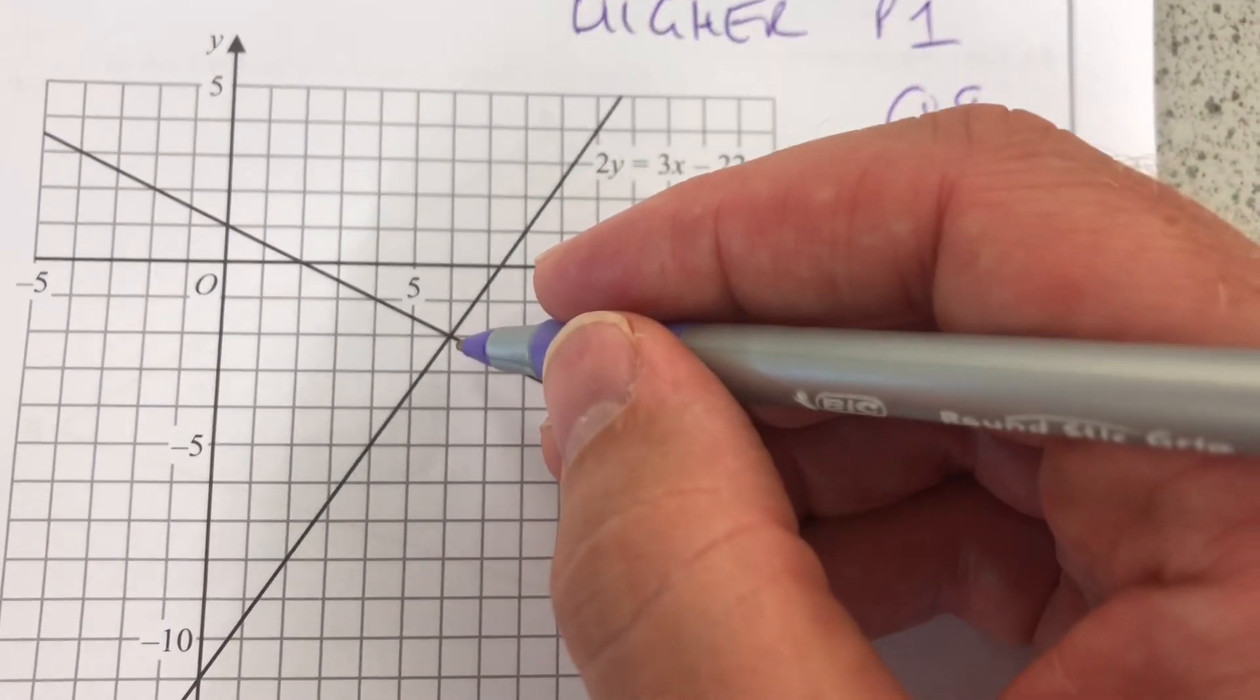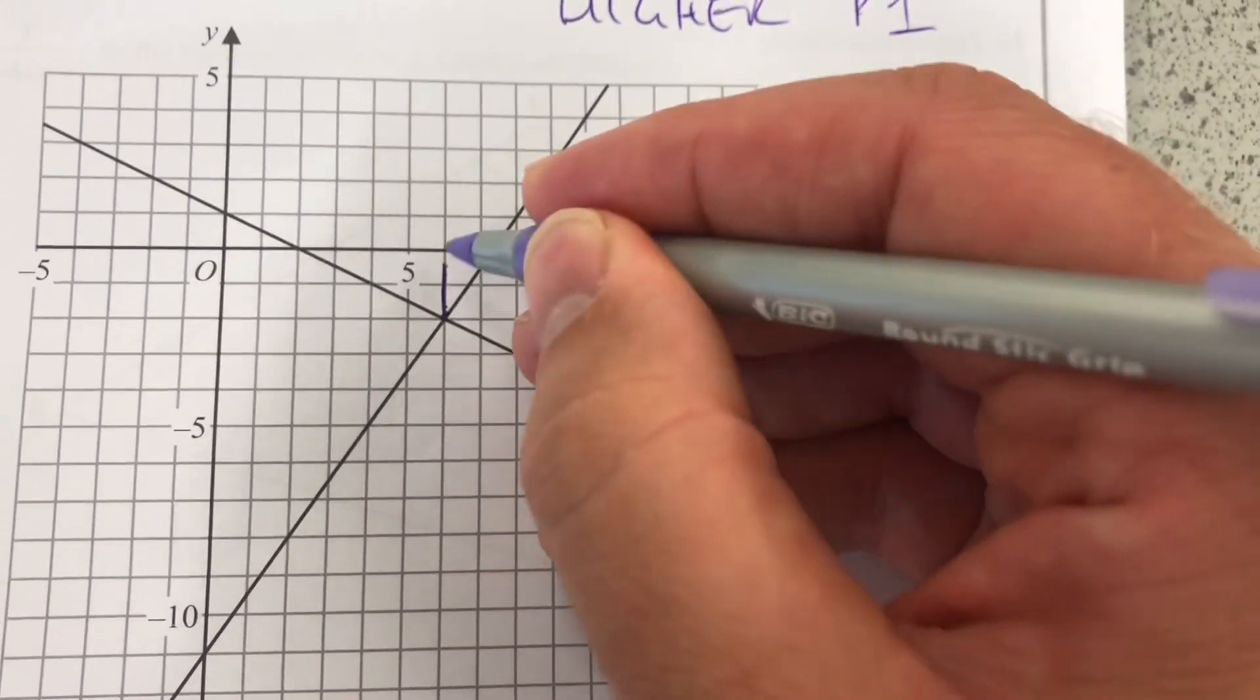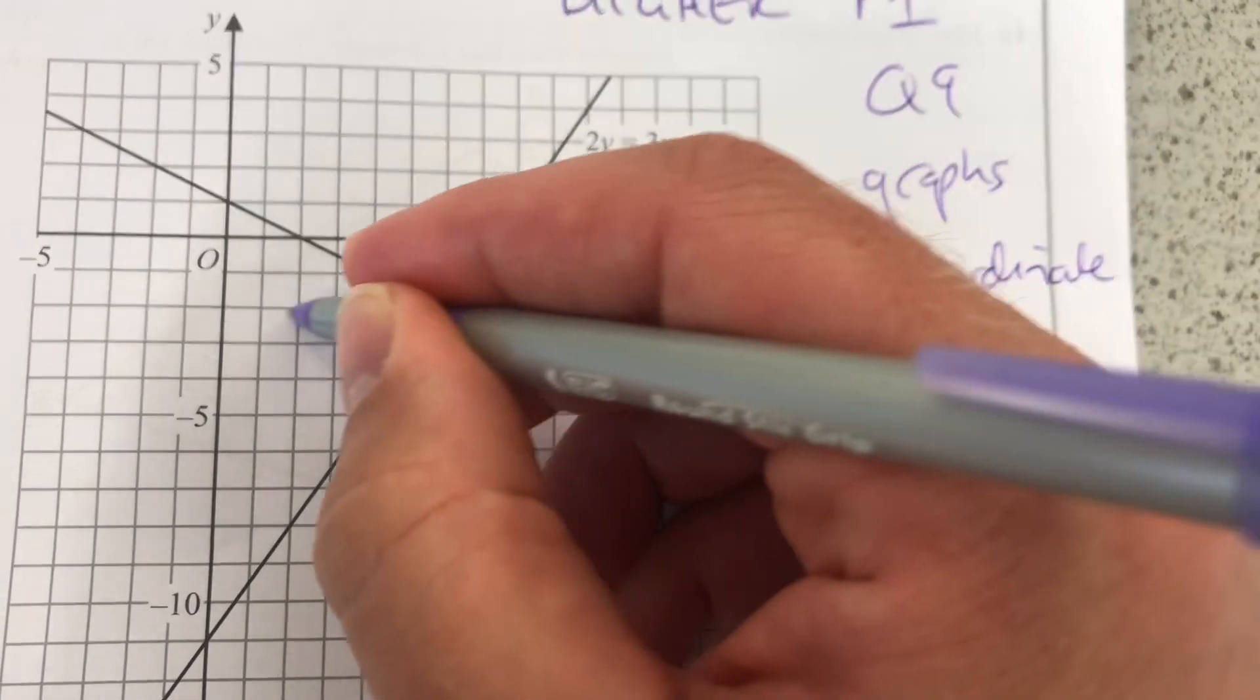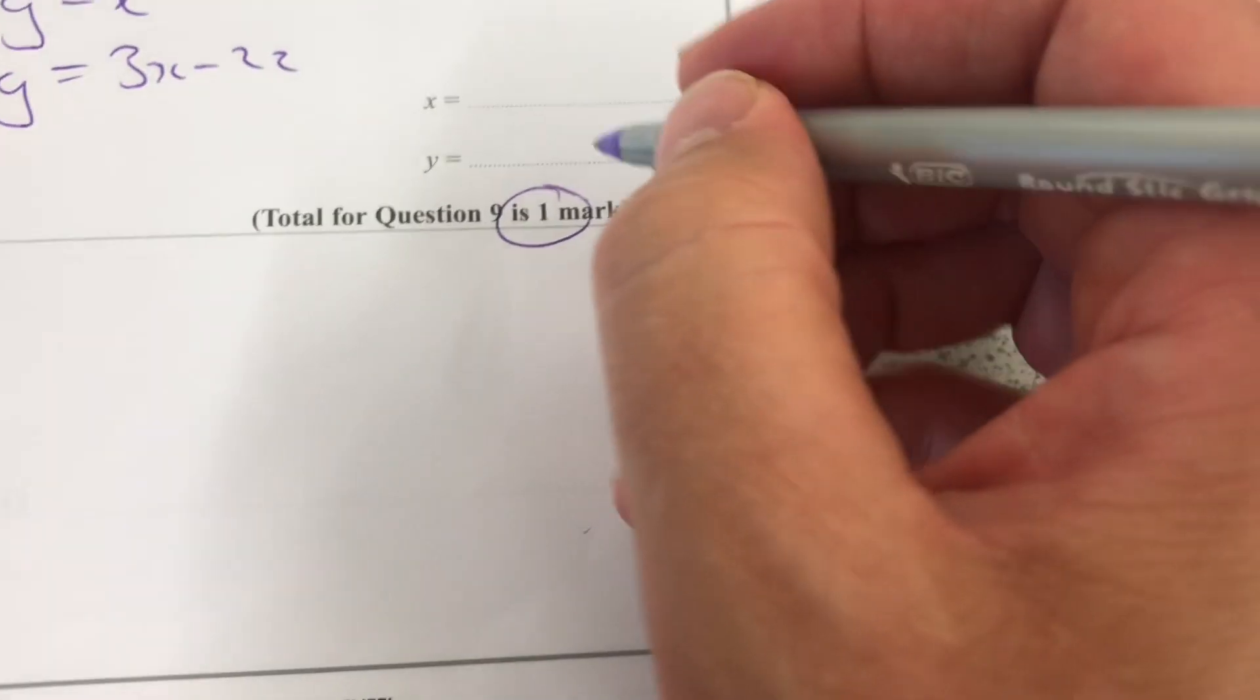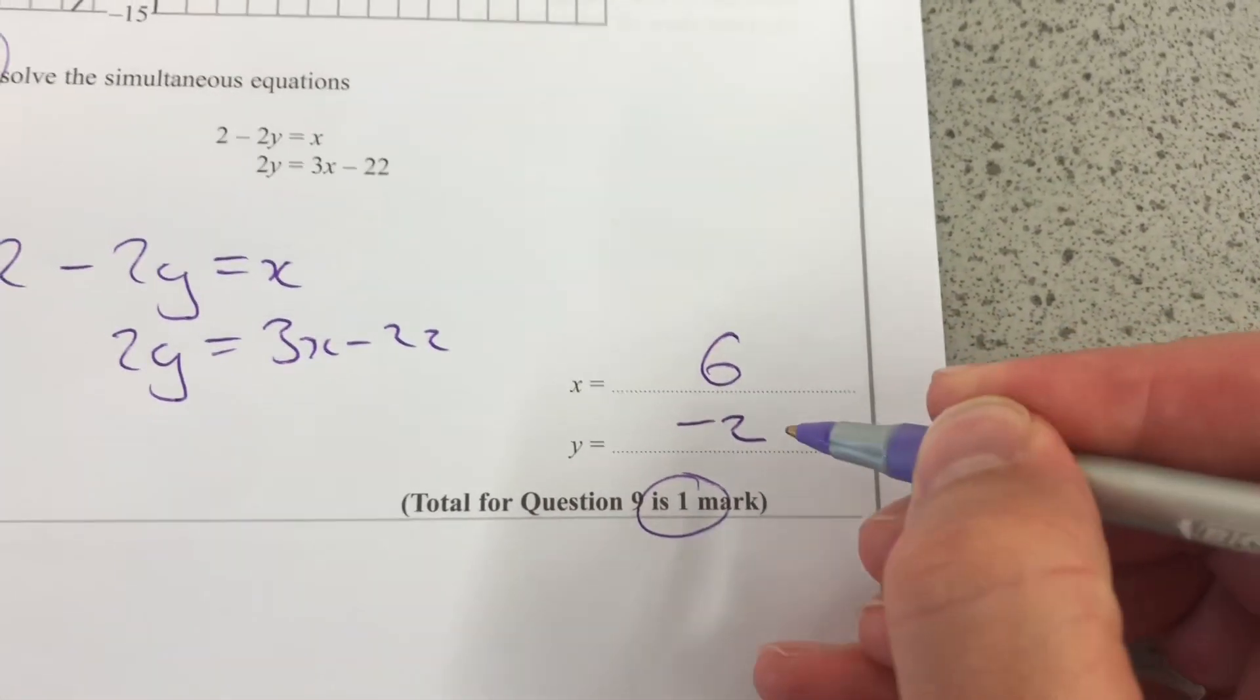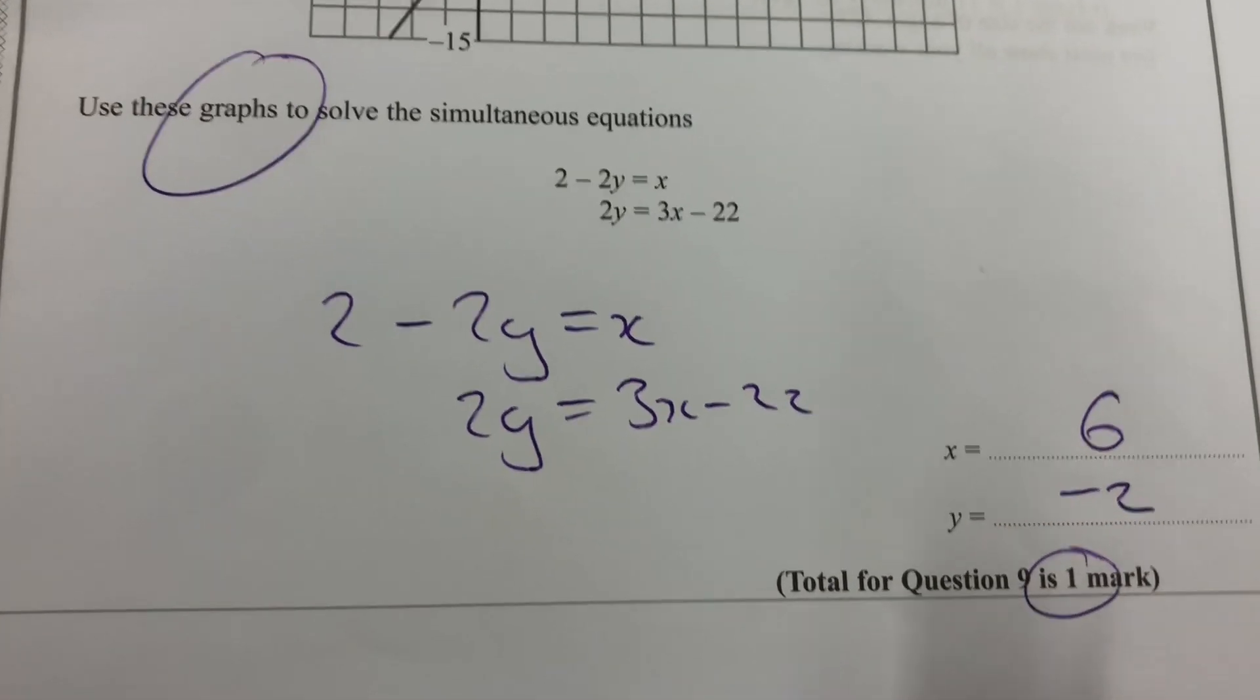So that's what that means: where the two graphs meet. So the x value is going to be 6, and the y value is going to be minus 2. So for one plain mark, all you need to write is 6, minus 2. But let's do some algebra to know that we're right.